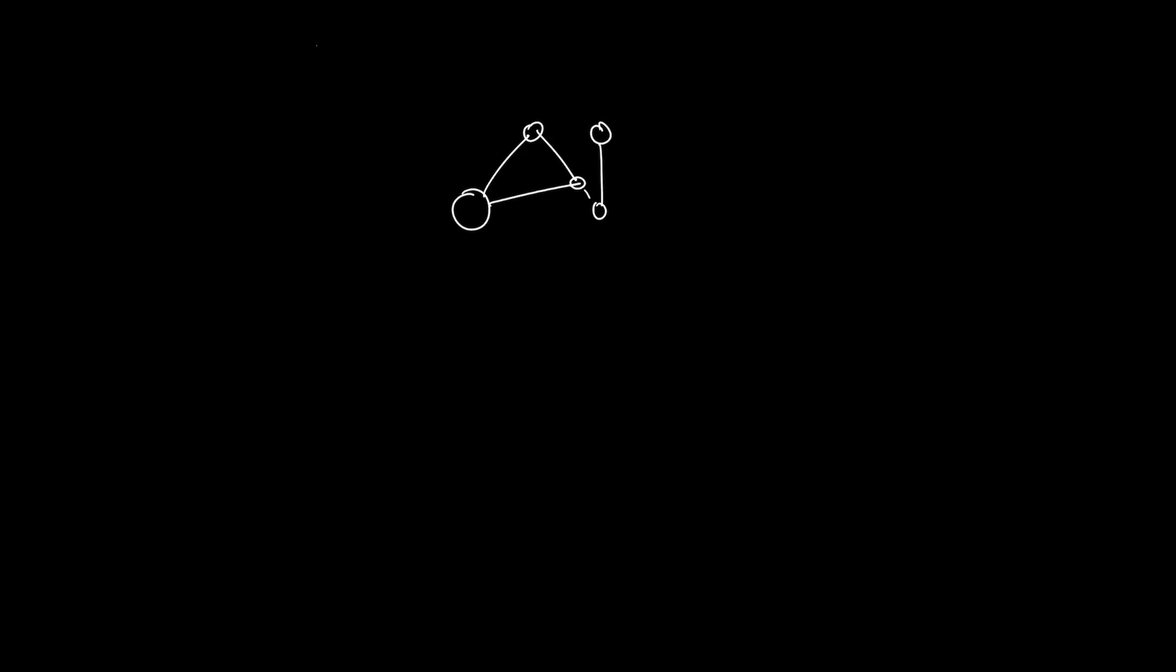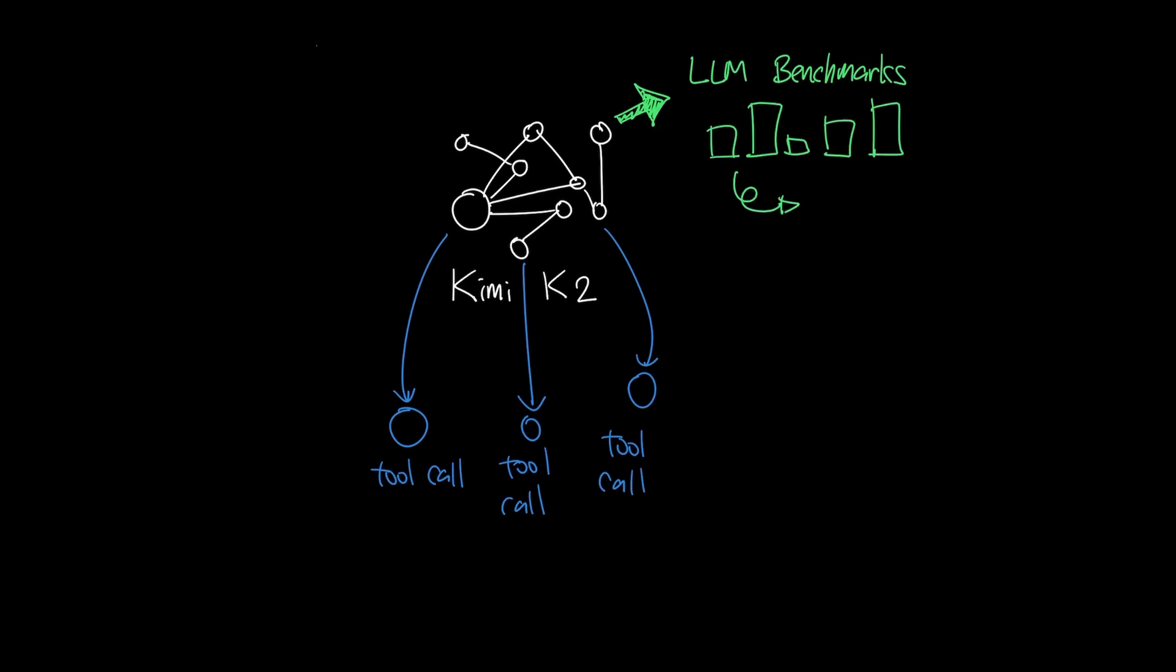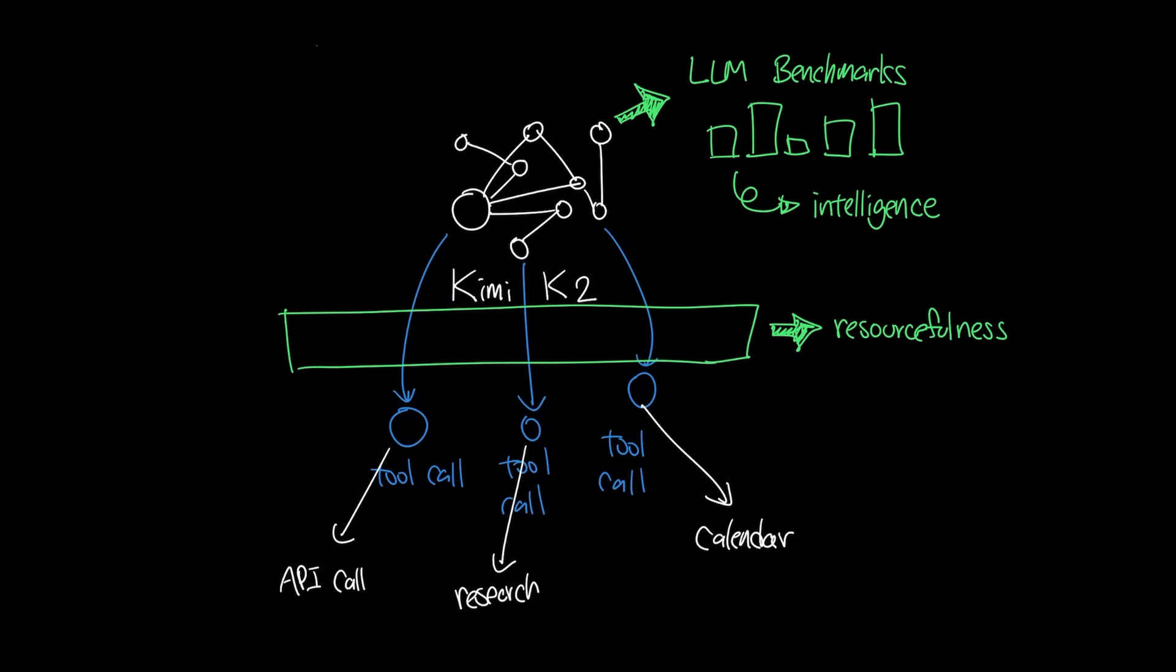Kimi K2 is also built around actions, meaning that it's specifically trained to make better tool calls. And I think this is a very important point where LLM benchmarks, which are typically used to measure the raw intelligence of a given model, is now expanding to look for models that are more resourceful in being able to leverage external services and tools to create better action.